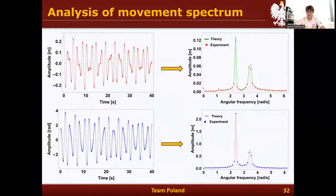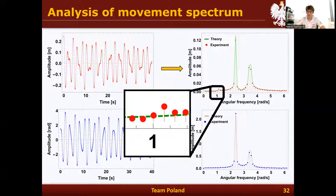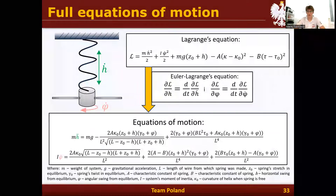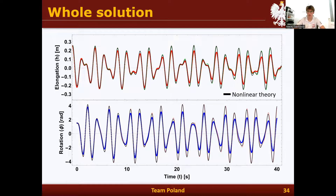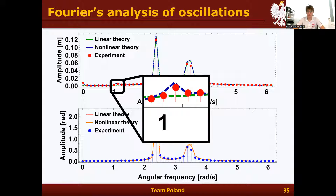Going back to the Fourier transform, we noticed some extra angular frequencies with small amplitude that occurred in the experiment but are not predicted by our linear theory. To investigate this, we went back to the Lagrange equation and solved the full nonlinear equations of motion numerically using Wolfram Mathematica. Comparing linearized theory, full nonlinear theory, and experiments: based on trajectories we can't clearly distinguish the two theories, but the Fourier transform shows that nonlinear theory predicts the nonlinear behavior. However, due to the small amplitude of these extra frequencies, linear theory still predicts experiments very well for smaller initial conditions.